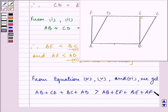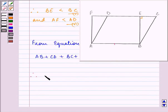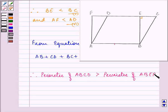Now, if you carefully notice, AB plus CD plus BC plus AD is the perimeter of the parallelogram. And that is greater than the perimeter of the rectangle, that is AB plus EF plus BE plus AF.